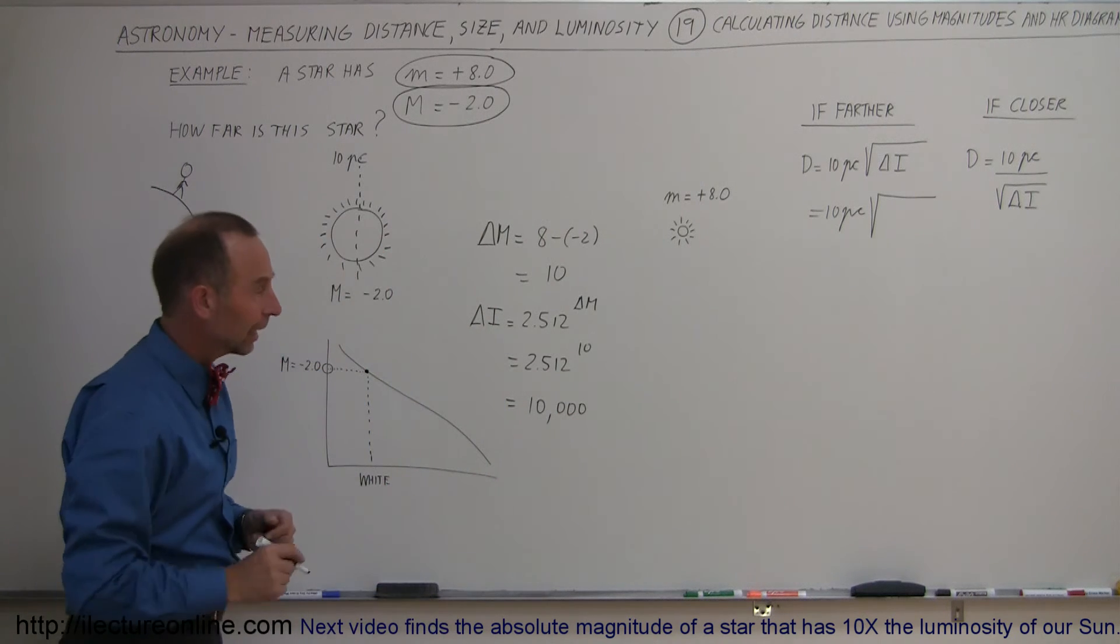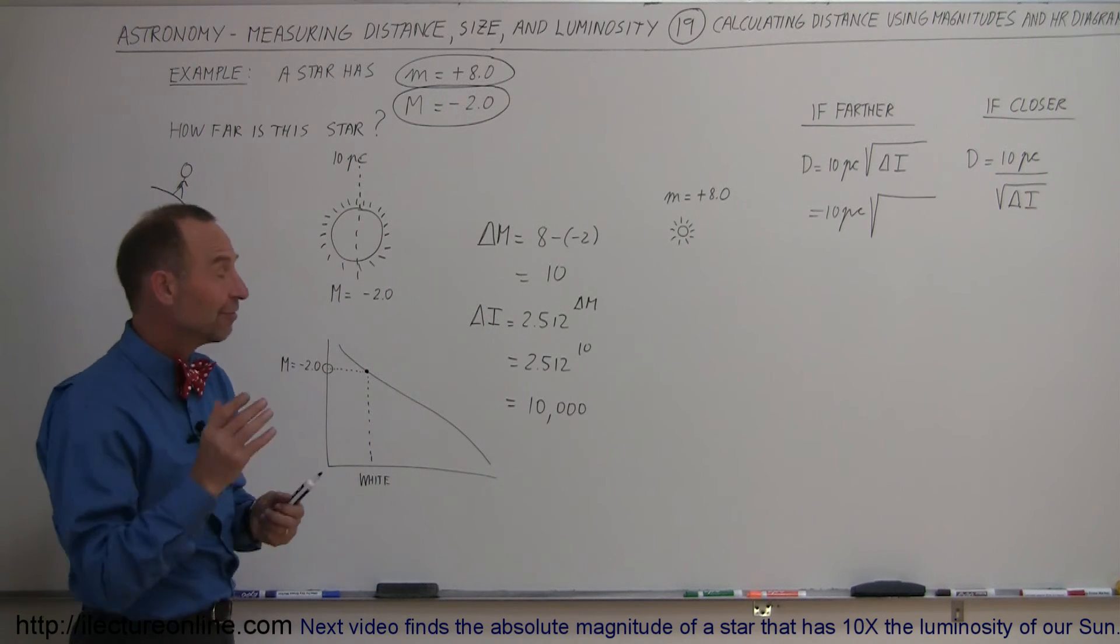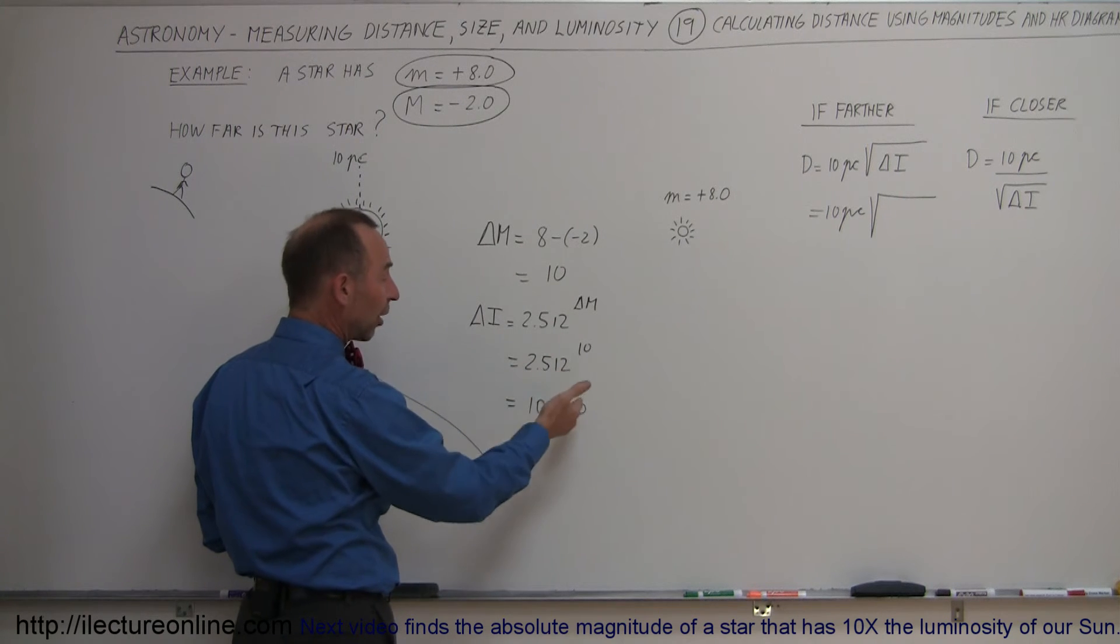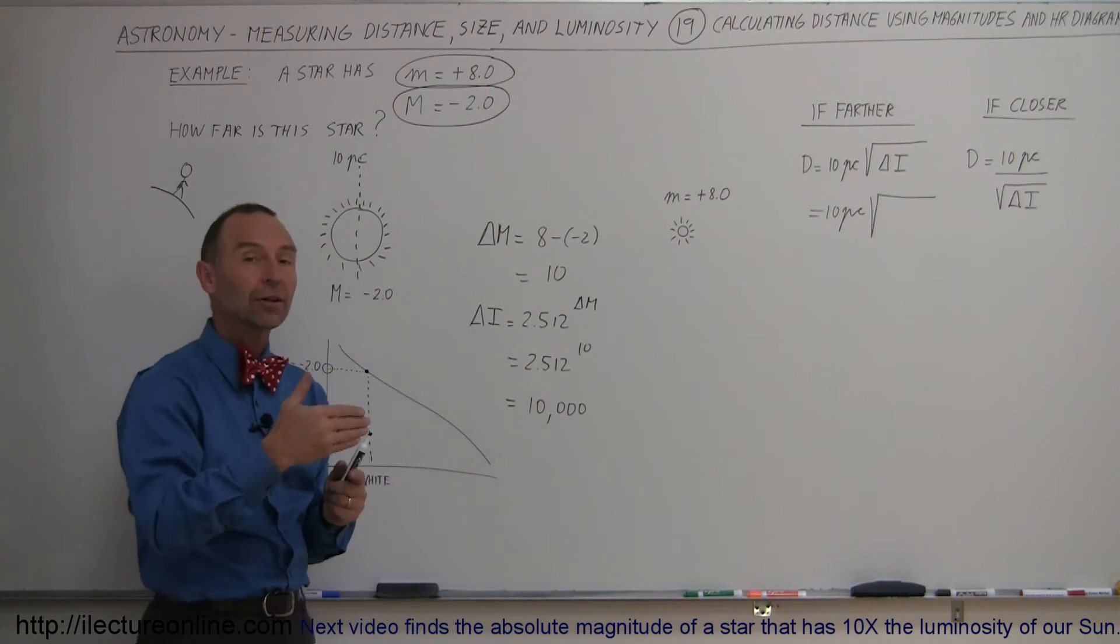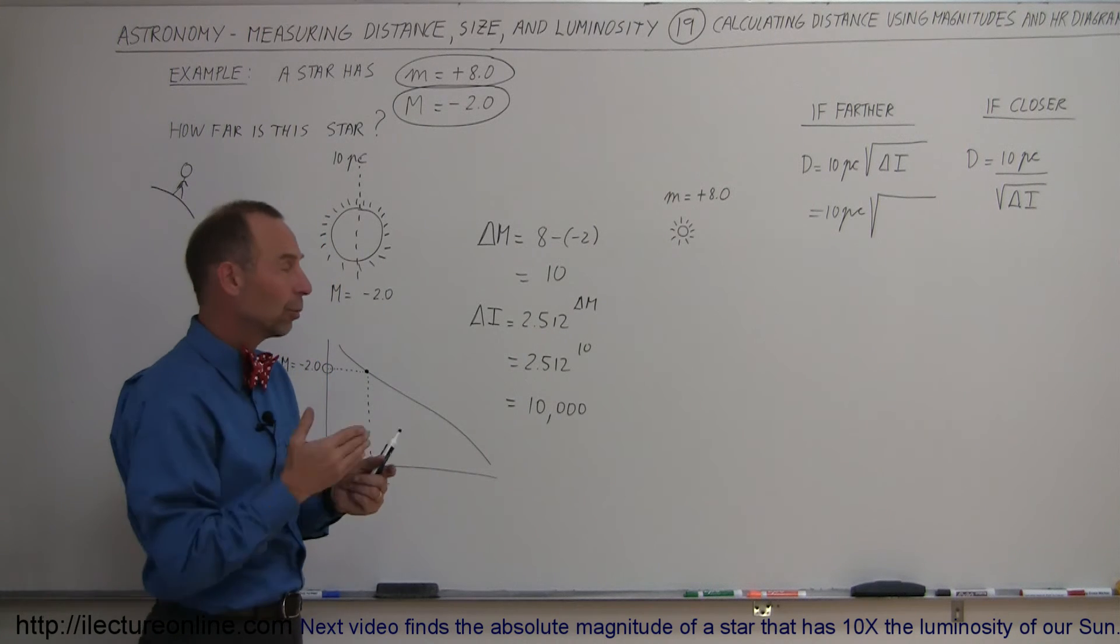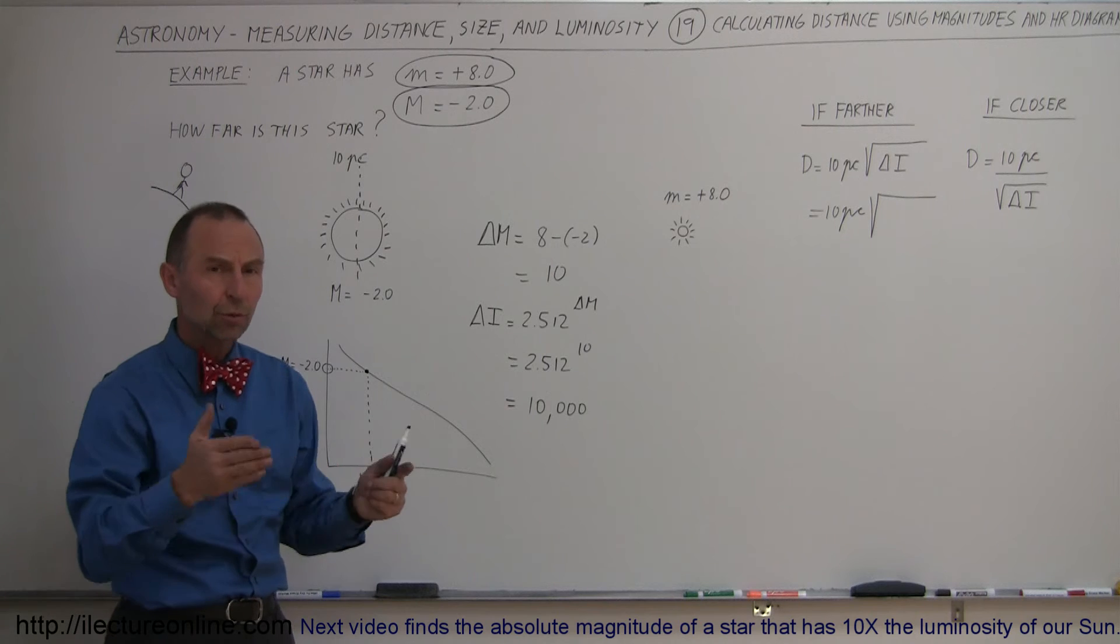Wow! How did I figure it out without a calculator? Well, it turns out that for every 5 magnitudes, it's a difference of 100. So for 5 magnitudes, it's 100. For 10 magnitudes, it's 100 times 100, so it would be 10,000. For 15 magnitudes, it would be 100 times 100 times 100, which would be a million.